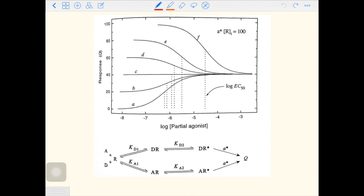Things can become more complicated when there are two agonists in the system. One of them is a full agonist, and the other one is a partial agonist that can generate 40% of the maximal response.